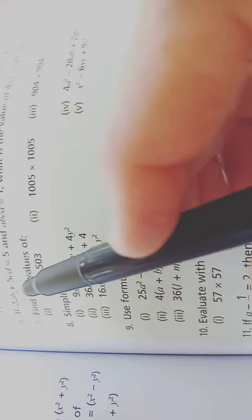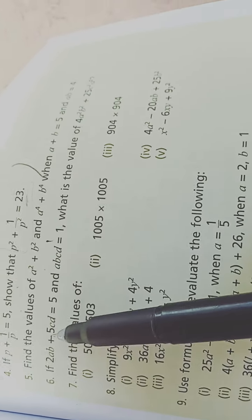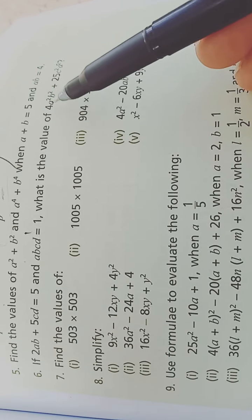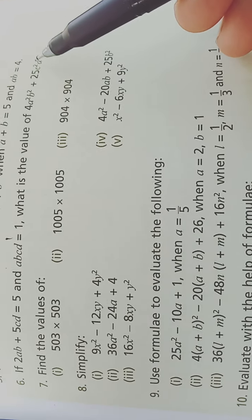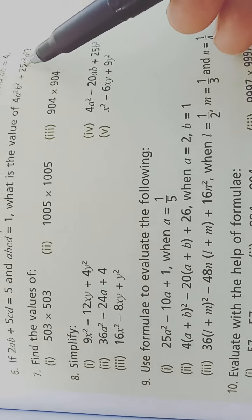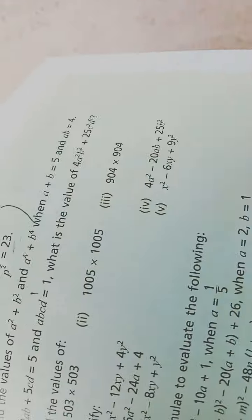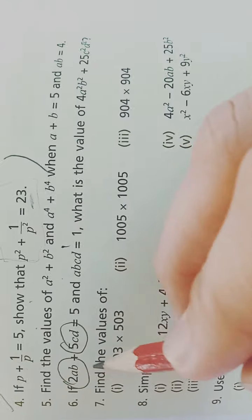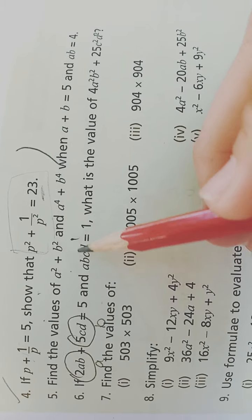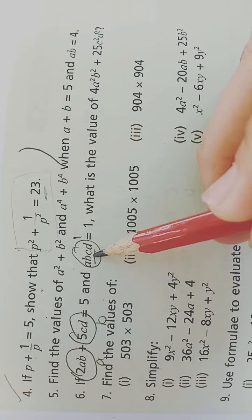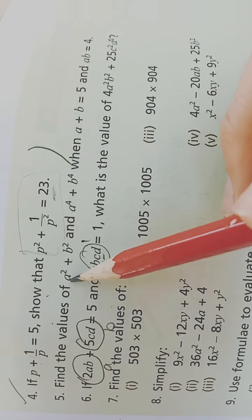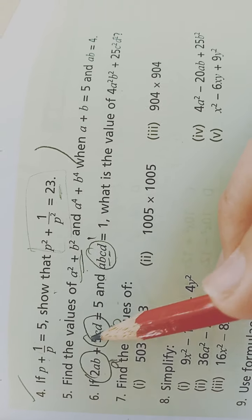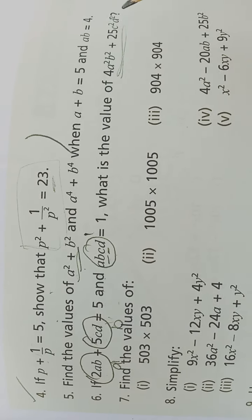Question 6: if 2ab + 5cd = 5 and abcd = 1, find the value of 4a²b² + 225c²d². You can treat 2ab as 'a' and 5cd as 'b', then follow the same steps as the previous question, placing 2ab and 5cd in the formula.